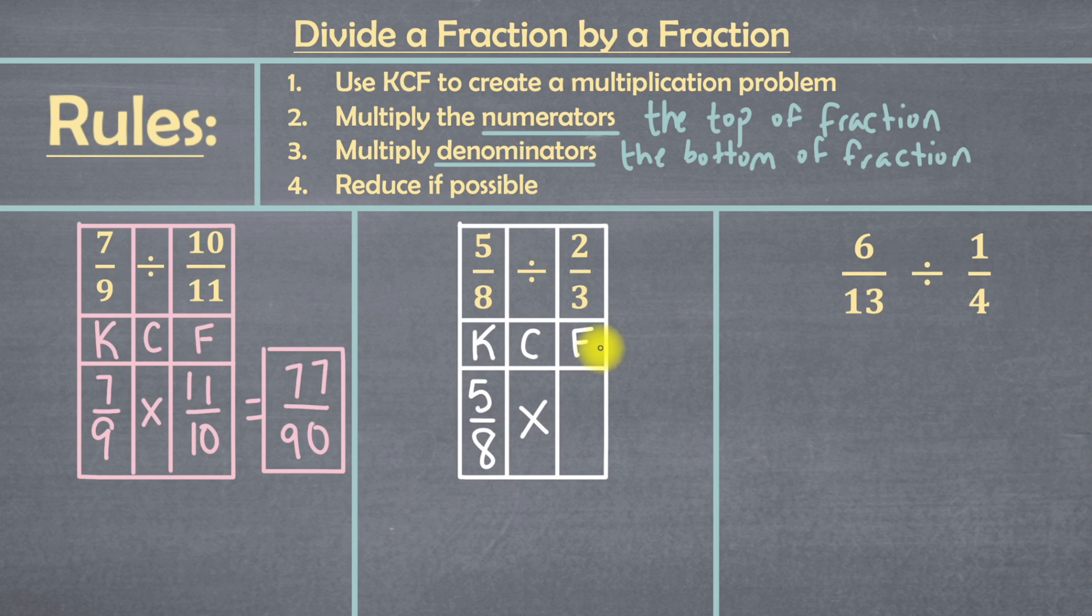So let's write that here. And last, in our third column, we have F. And that F stands for flip. So this 2 over 3 is going to flip and become 3 over 2. Then we can go to rule number 2, which is to multiply the numerators. The numerators in these fractions are 5 and 3. Because 5 is the top of this fraction, and 3 is the top of this fraction. So that's going to be 5 times 3, which equals 15.